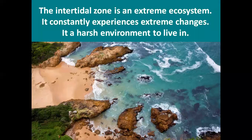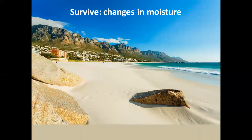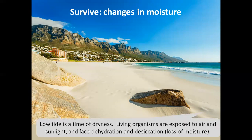The intertidal zone is an extreme ecosystem that constantly experiences extreme changes. It is a harsh environment to live in. Living organisms need to survive changes in moisture. Low tide is a time of dryness — living organisms are exposed to air and sunlight and face dehydration and desiccation, meaning loss of moisture. Living organisms also need to survive underwater.